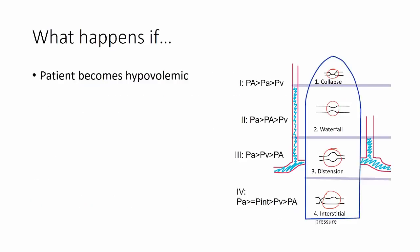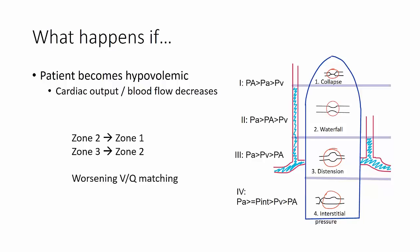What happens to the zones of the lung if the patient becomes hypovolemic? In this case, cardiac output and therefore blood flow would decrease. As a result, areas of zone two would shift to zone one, and zone three would shift to zone two, because there would be less pressure within the blood vessels. This would result in worsening of VQ matching within the lung.